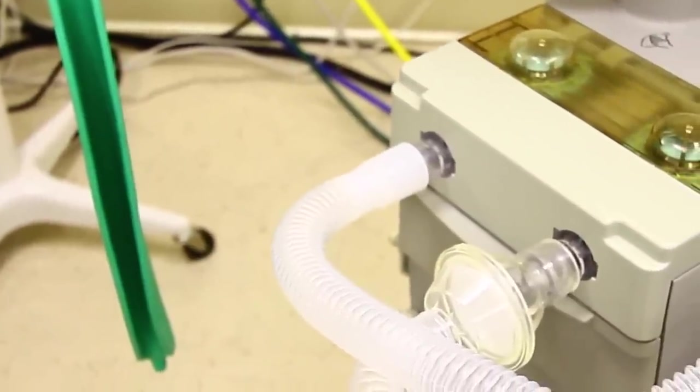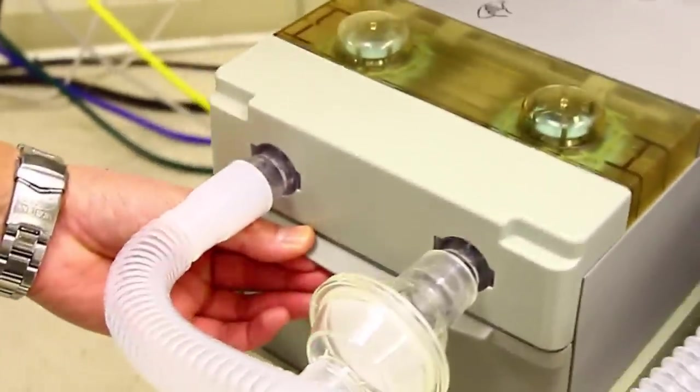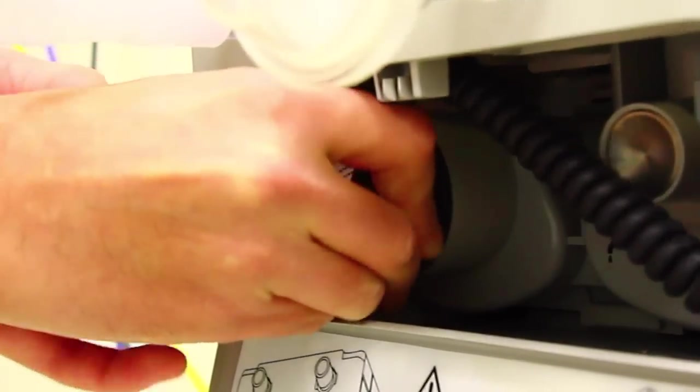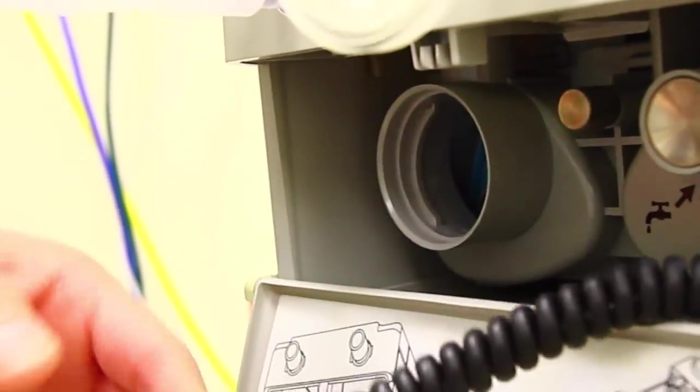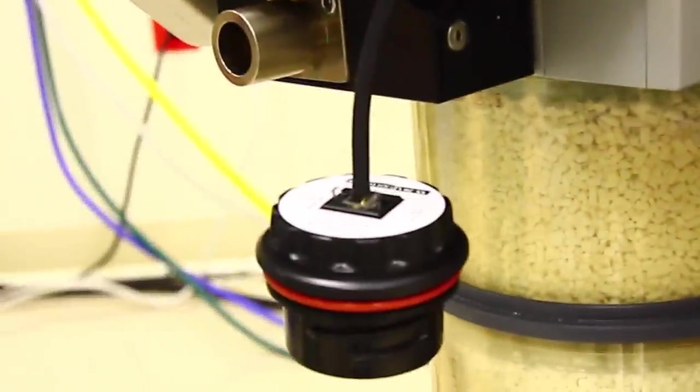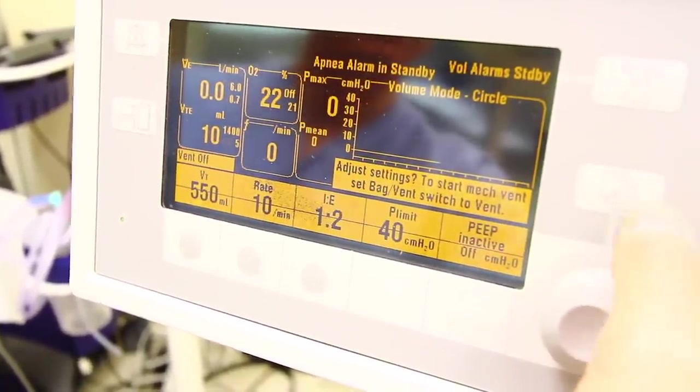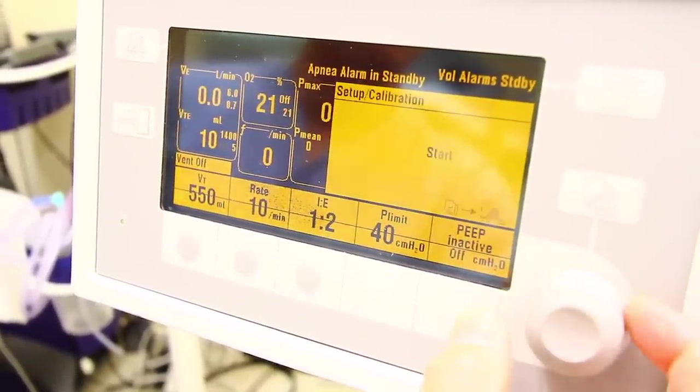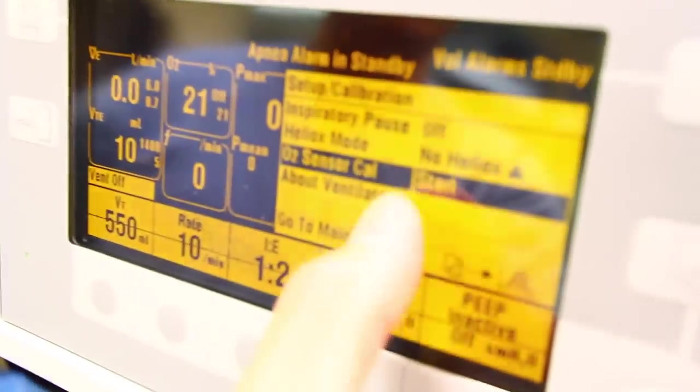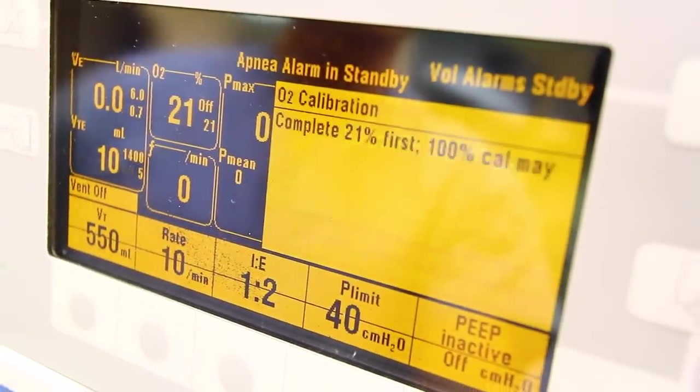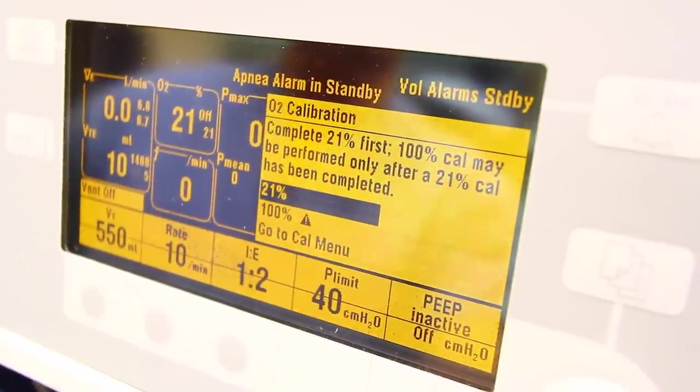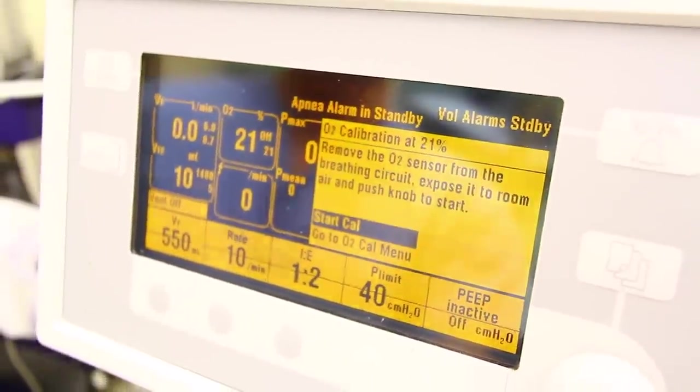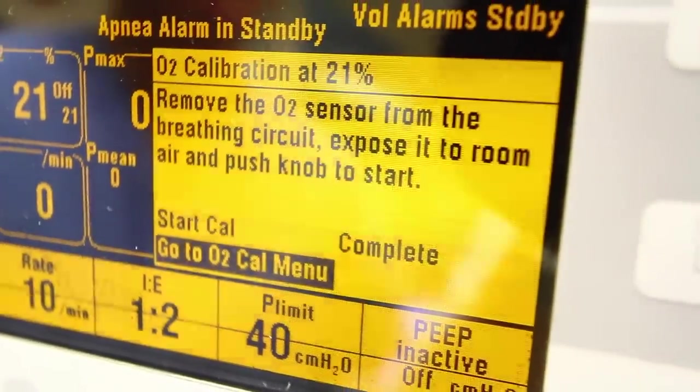Next part of checking the breathing system is to calibrate the oxygen monitor. Open the oxygen monitor door and unscrew the actual oxygen monitor. Sometimes it can be difficult to unscrew. Expose this to room air for a few minutes. In order to calibrate the oxygen sensor, press the menu button. Turn the knob counterclockwise until you can select setup and calibration. Push the knob. Again, turn it counterclockwise until you get to oxygen sensor CAL, and then press the knob again to start. First thing you want to do is complete the 21% calibration. Press the knob, then start calibration.